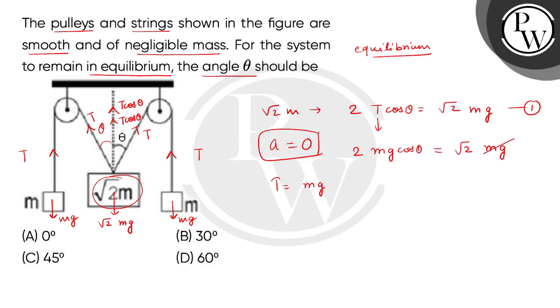mg will cancel and cos theta equals to 1 by square root of 2. So theta's value is cos theta equals to 1 by square root of 2, which means theta's value will be 45 degrees.